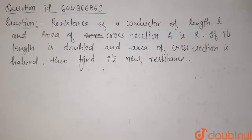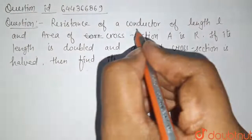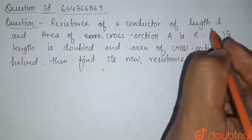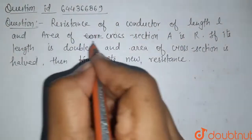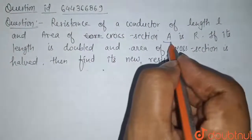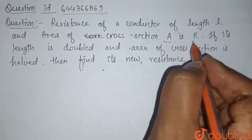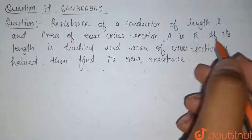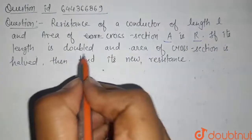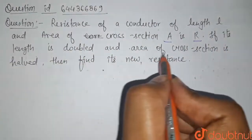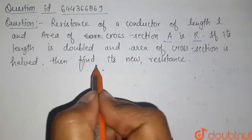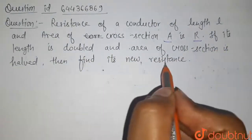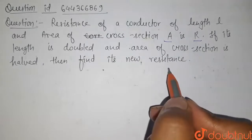Hello students, here is our question. Resistance of a conductor of length L and area of cross section A is equal to R. If its length is doubled and area of cross section is halved, then find its new resistance.